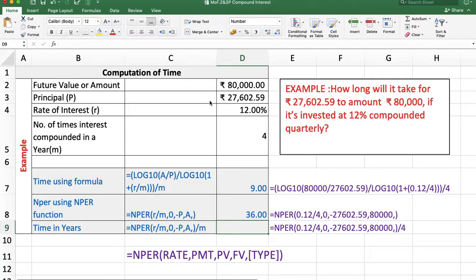We get 36 periods. Because interest is compounded quarterly, we have 36 quarters, which means 9 years.